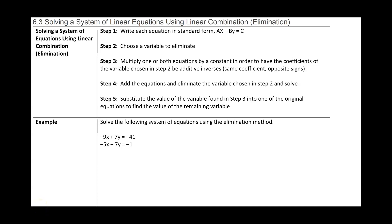In section 6.1 we learned how to solve a system of equations using graphing. In section 6.2 we learned how to solve a system of equations using substitution. Now here's a problem with substitution: you always need to have one variable with a coefficient of one, like the x, because then you can move the 2y to the right and solve for x — you can say x equals 6 minus 2y. But what if we have equations like this example where none of the variables have a coefficient of one? That leads to a problem.